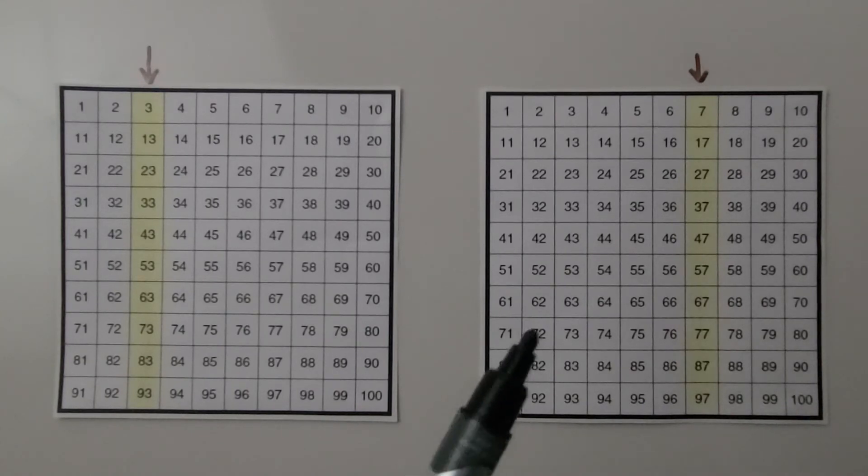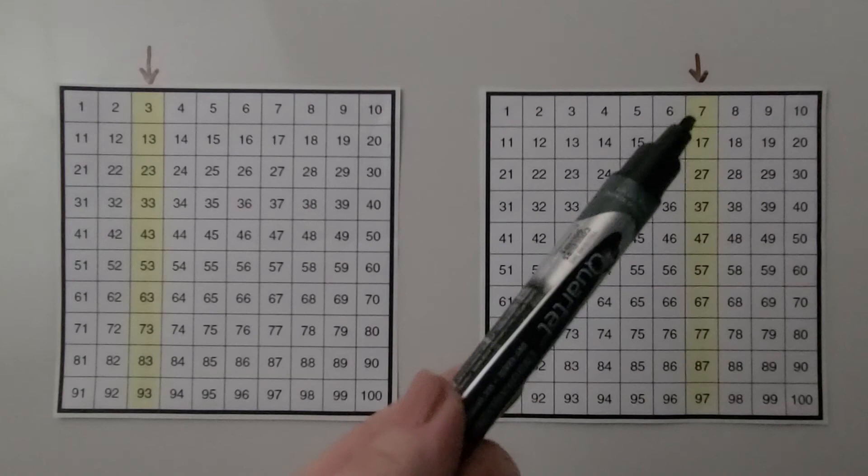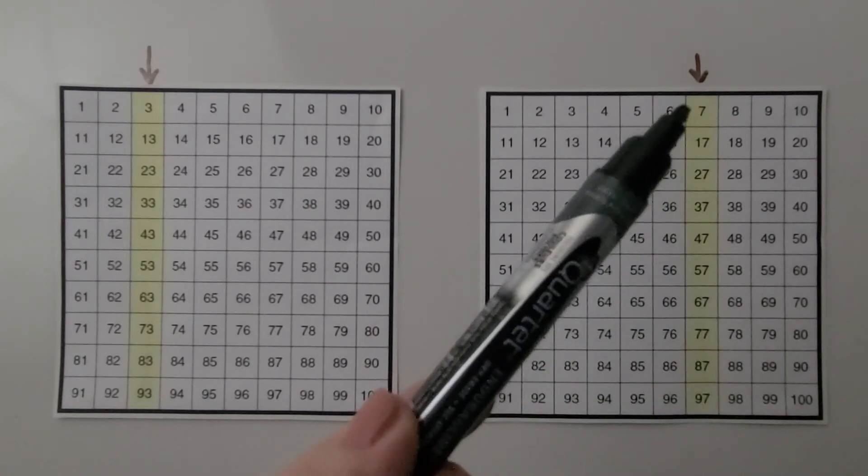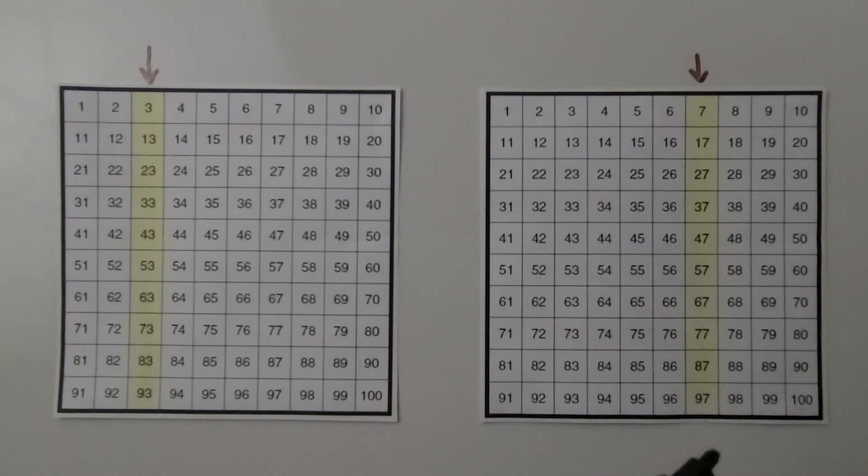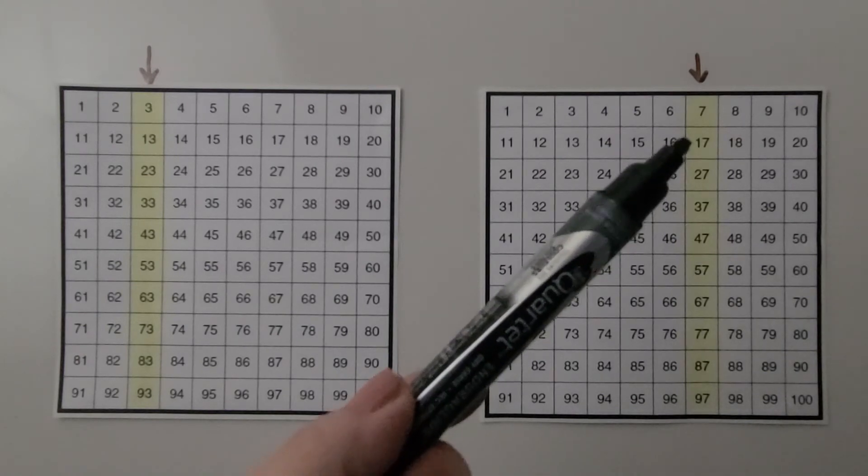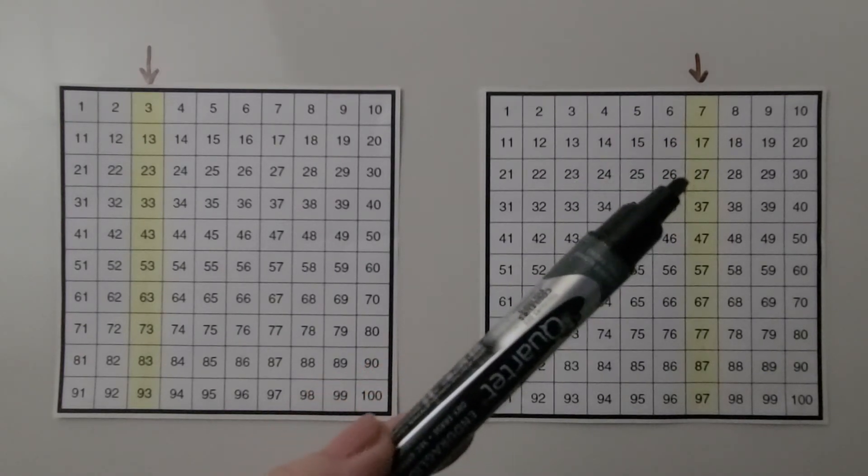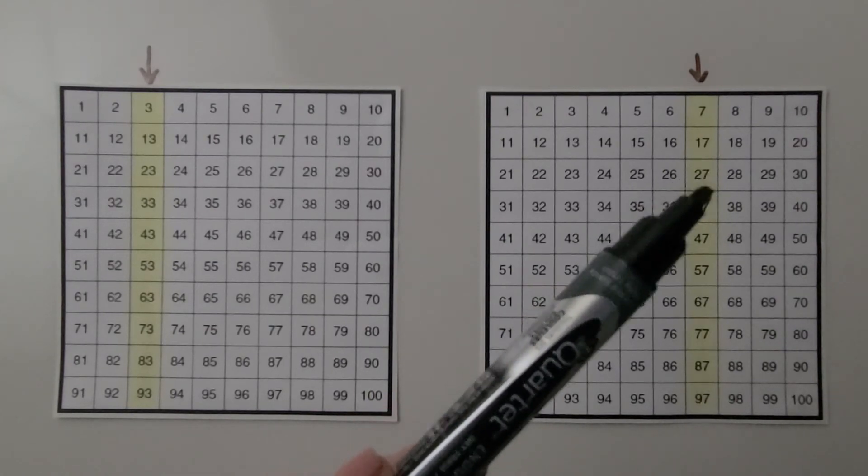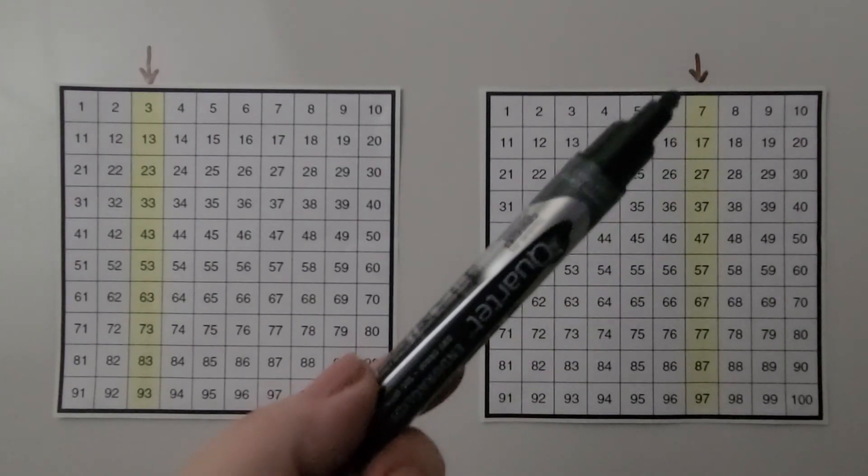In this one, we can see this column is highlighted. Each number is going to end with a 7 and be 10 more than the number above it. Seventeen is 10 more than 7, 27 is 10 more than 17, and so on.